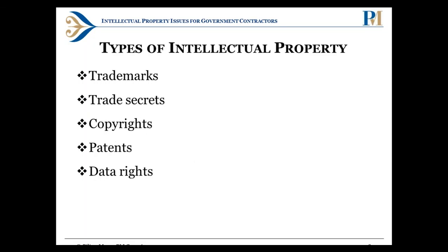The different types of intellectual property — the big three are trademarks, copyrights, and patents. But what we see most frequently for government contractors is the area of trade secrets. And most recently there is a new trade secret law that was just enacted, so we really want to make sure we bring you up to date on that and what changes you need to make to address it.